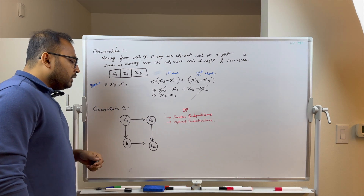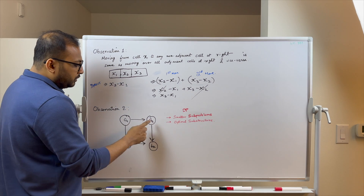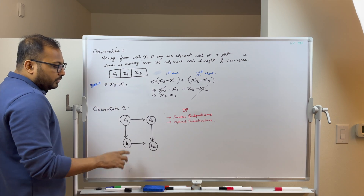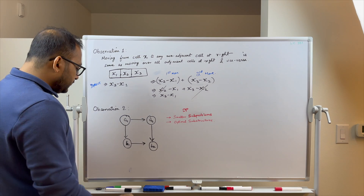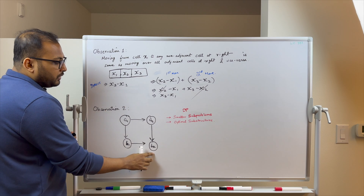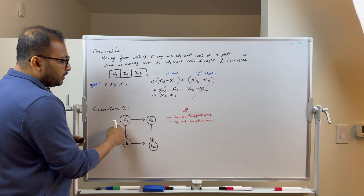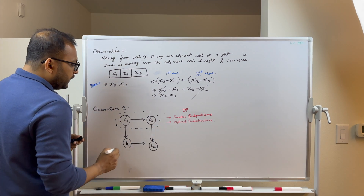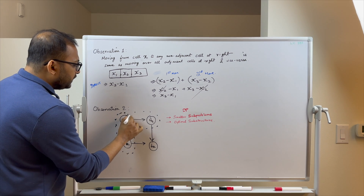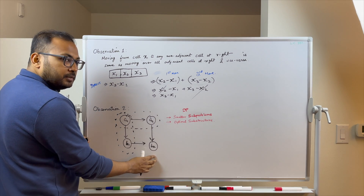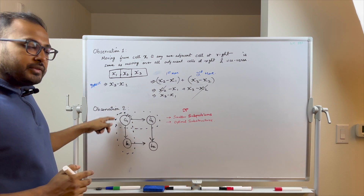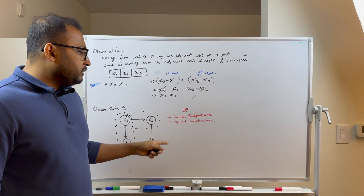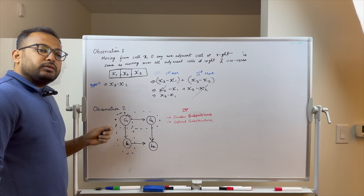For observation 2, consider a 2×2 grid with values a1, a2, b1, b2. If we know the optimal cost of two sub-matrices, we can combine them to get the optimal cost for the full grid. This means the problem has overlapping sub-problems and optimal substructure, so we can apply dynamic programming.